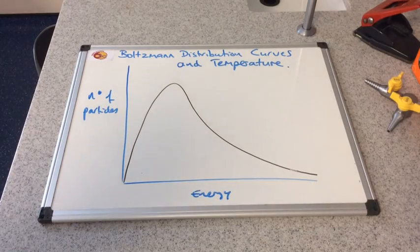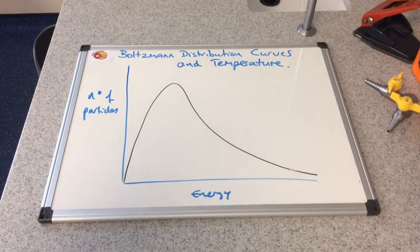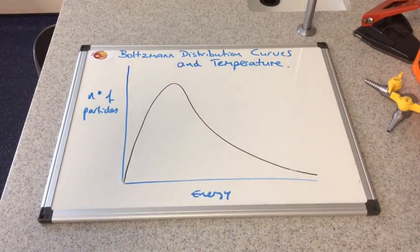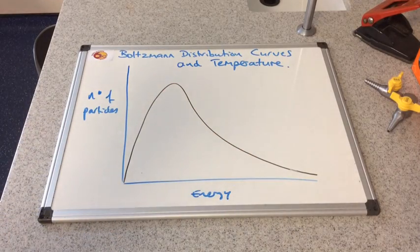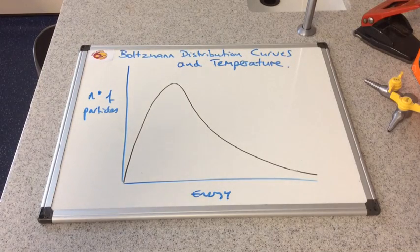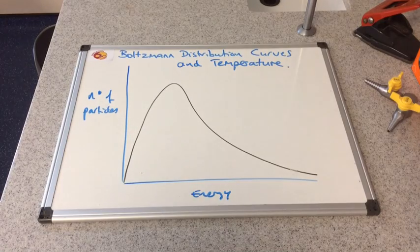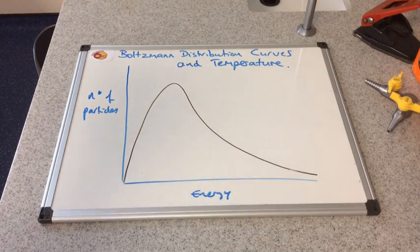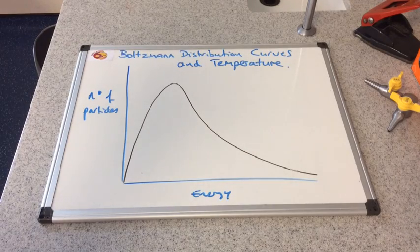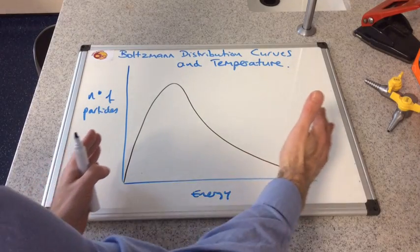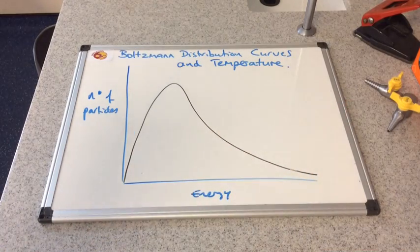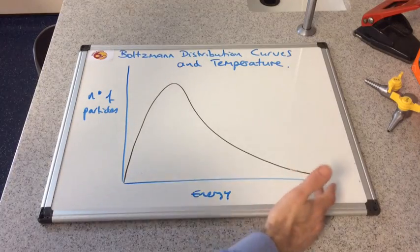So if we look at Boltzmann curves and temperature now, we've got this black line representing the distribution of the particles at a medium temperature. So what I want to do first is lower the temperature. Obviously at a lower temperature all of the particles have less kinetic energy than before, so we're going to shift the curve to the left hand side, at the lower energy side of the energy axis.